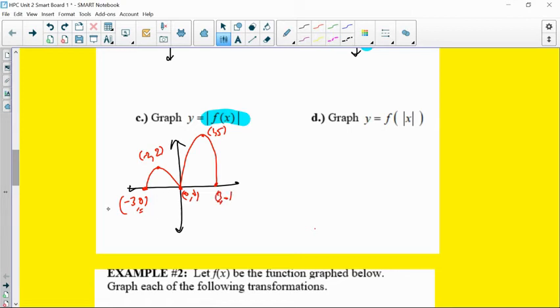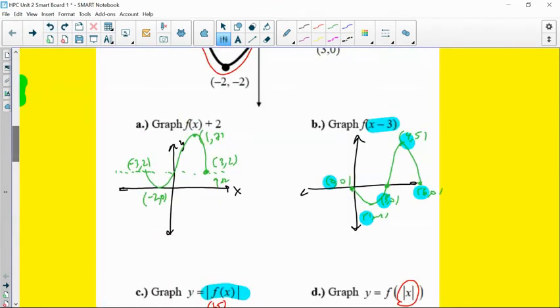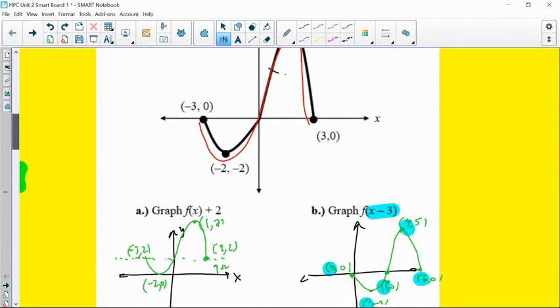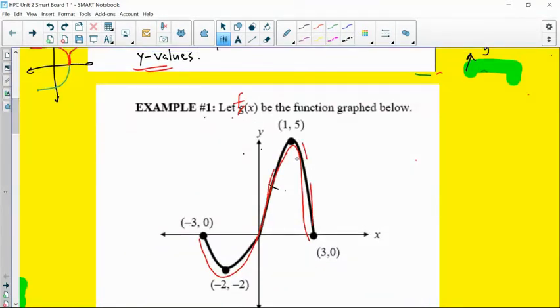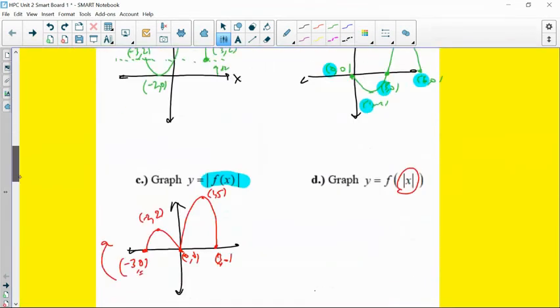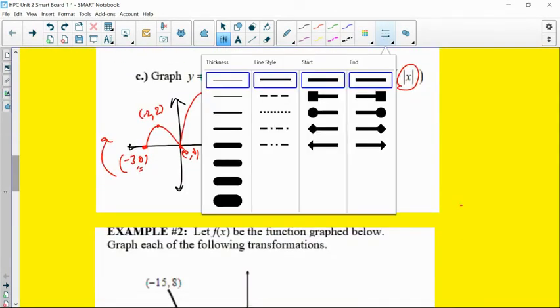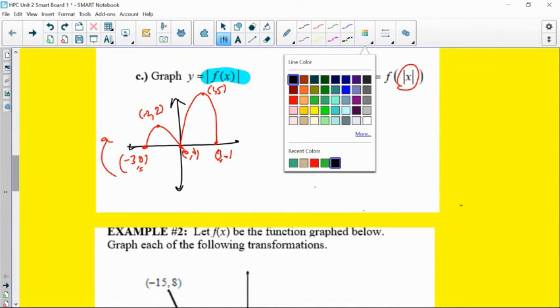So only the things that were below get reflected above. So it's not a reflection over the x-axis, because if it were, then this would have been graphed below. Next, when it's on the inside, remember, the behavior of the right does not change. So the behavior of the right does not change. So that's going to stay the same on my graph, so I can at least get that down.